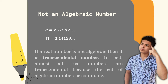Now I will give you numbers that are not considered algebraic numbers. We have the examples e, which is equivalent to 2.71828..., and also π, which is equivalent to 3.14159... Why are these not considered algebraic numbers? If a real number is not an algebraic number, then it is a transcendental number — the opposite of an algebraic number. In fact, almost all real numbers are transcendental because the set of algebraic numbers is countable. This will be our next topic in the next video: transcendental numbers.